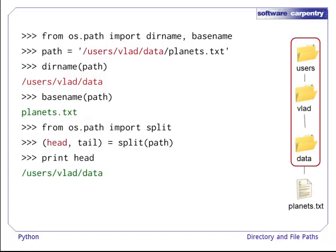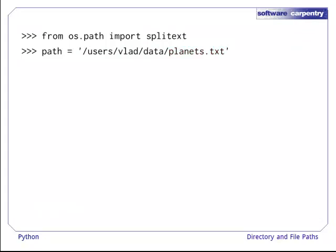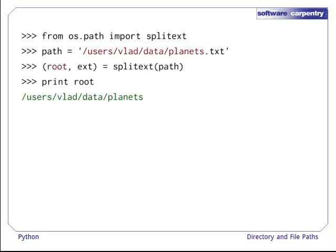Split combines the behaviour of both dirname and basename and returns a pair. The first element in the pair is the same as what dirname returns, and the second is the same as what basename returns. Another similar function is splitext. Splitext returns a pair consisting of all of the path up to, but not including, the file extension, and the file extension itself. If there is no file extension, then this is just an empty string.